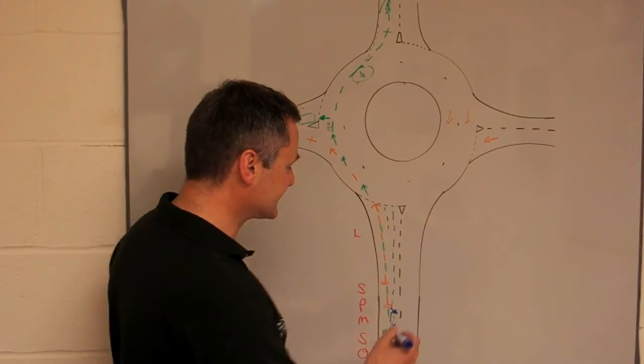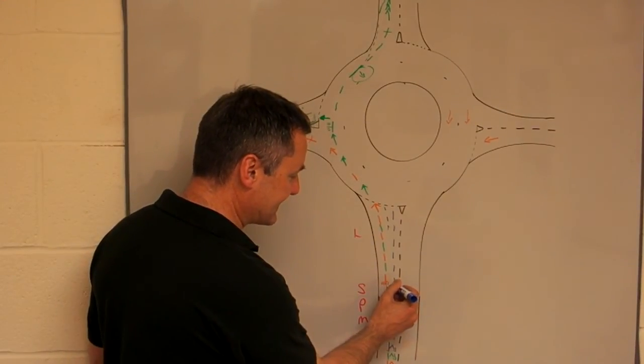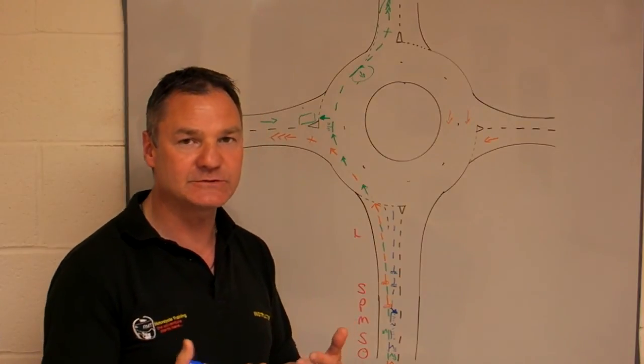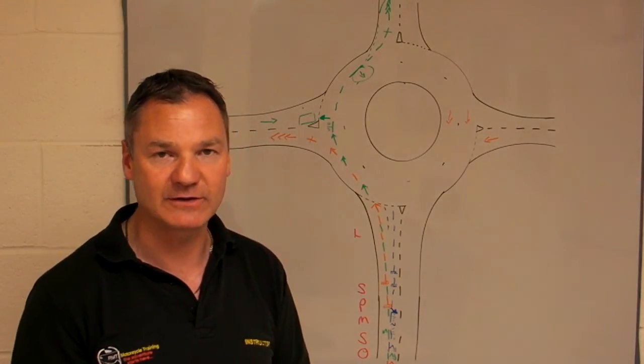Again, slowing down on brakes and gears, ensure we bring the speed of the bike down while we approach. And then as we get closer to the roundabout, moving on to the rear brake only.